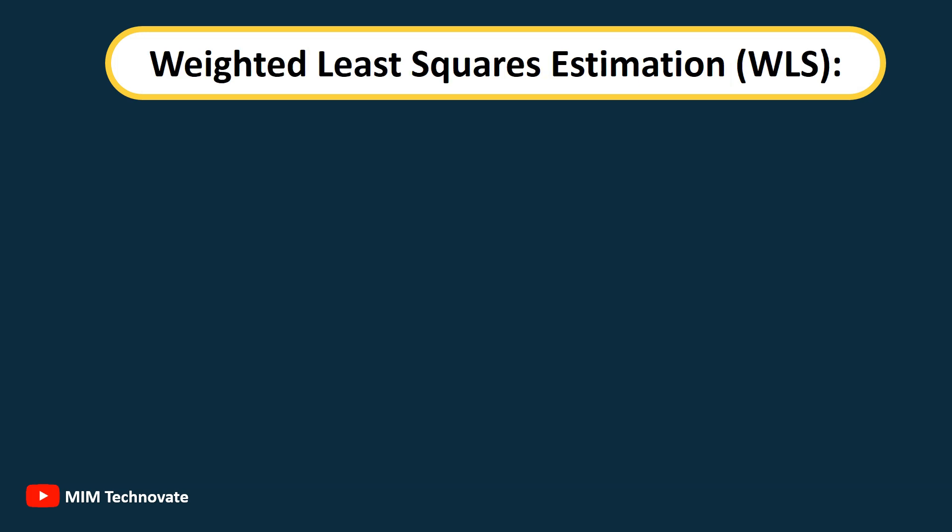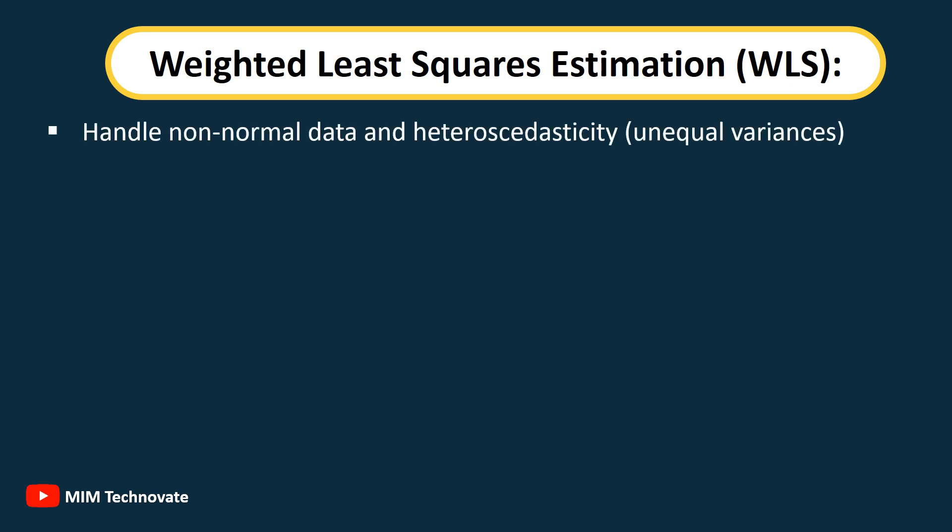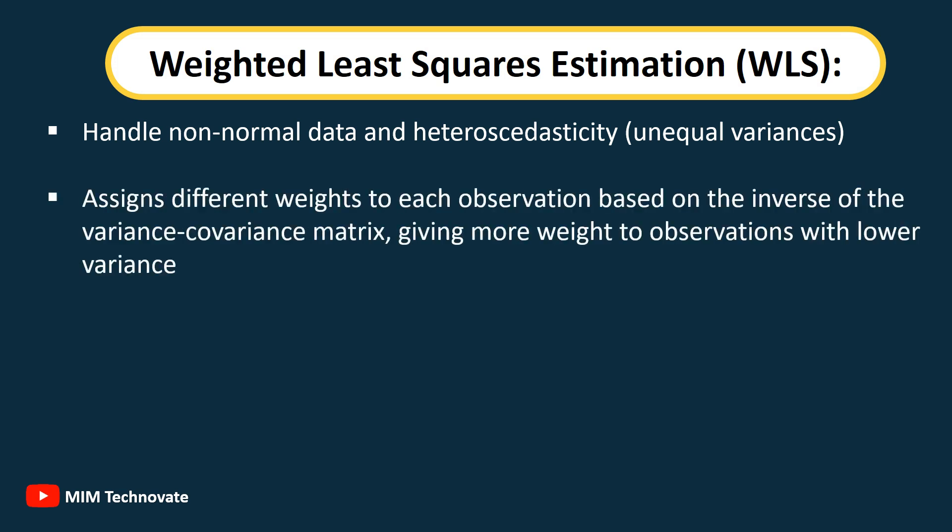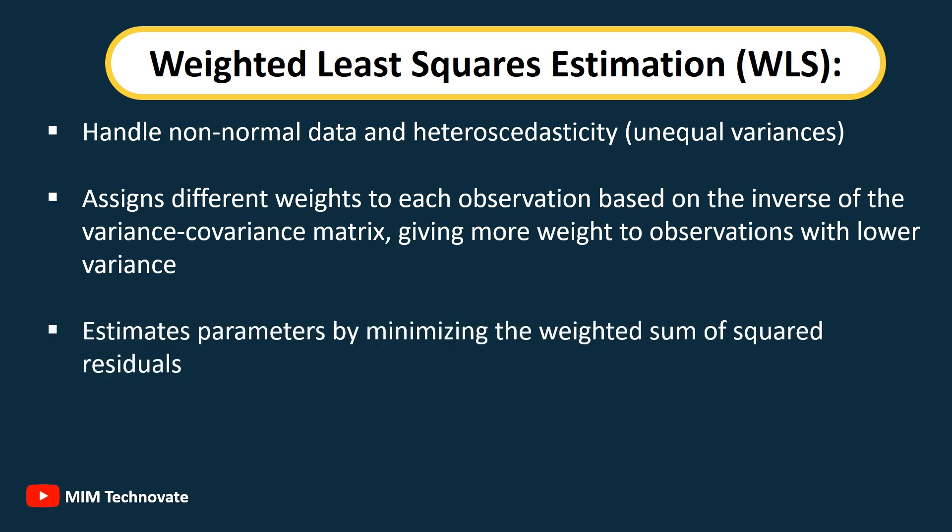Weighted Least Squares Estimation (WLS): A technique used in SEM to handle non-normal data and heteroscedasticity (unequal variances). It assigns different weights to each observation based on the inverse of the variance-covariance matrix, giving more weight to observations with lower variance. WLS estimates parameters by minimizing the weighted sum of squared residuals.